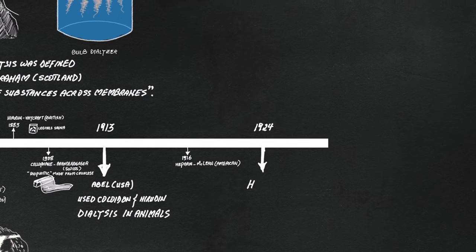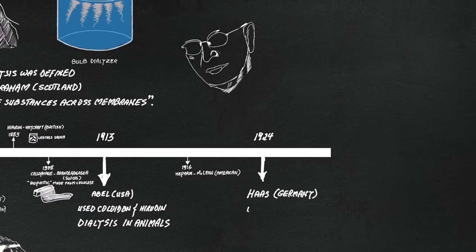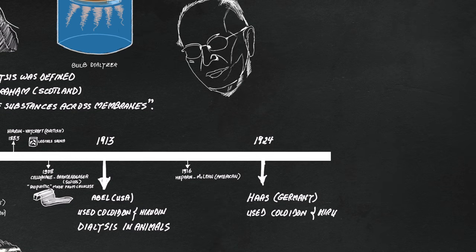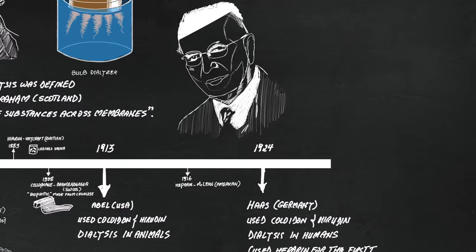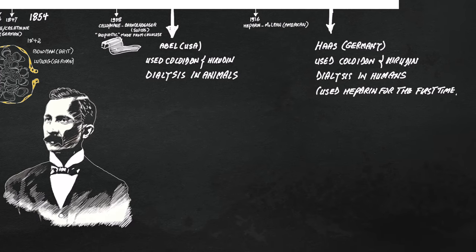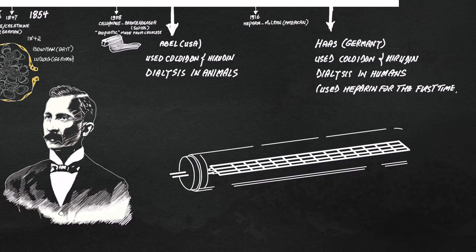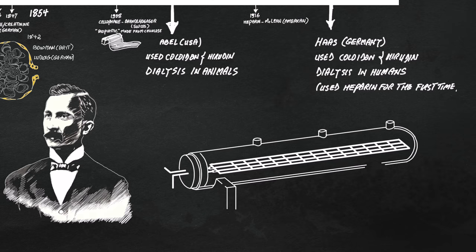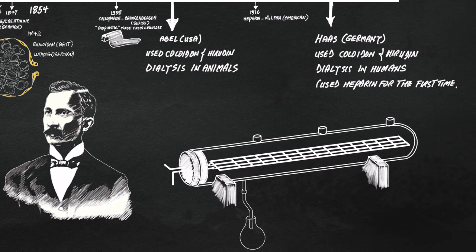The first ever dialysis in human patients was carried out by Dr. George Haas in Germany. Here you see the setup used by Dr. Haas when he dialyzed the first few patients.